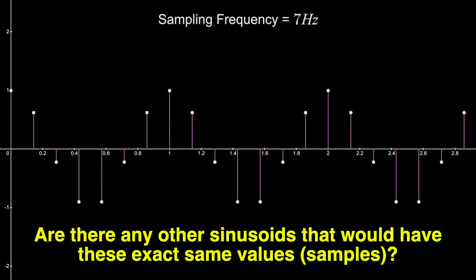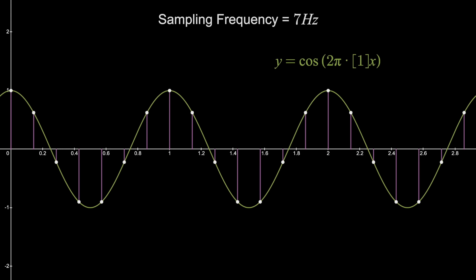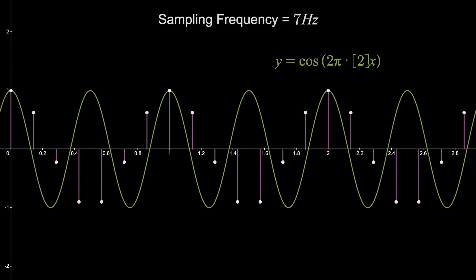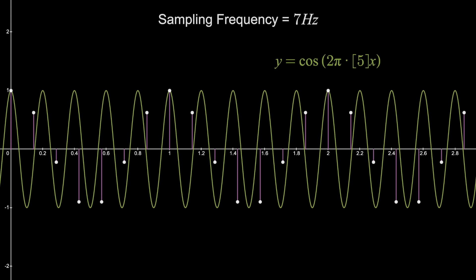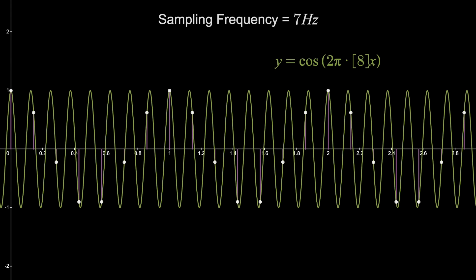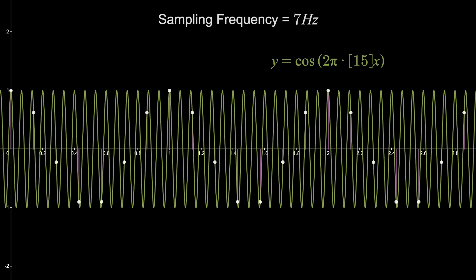Well, our original signal with a frequency of 1 Hz of course contains all these samples. Now, if we plot a sinusoid with a frequency of 2 Hz, notice it does not contain all these samples. Neither does 3 Hz or 4. But once we hit 6 Hz, all the samples line up with this new function. The same thing also happens at 8 Hz, 13 Hz, 15 Hz, and infinitely many more.